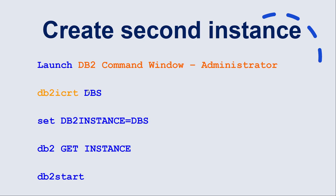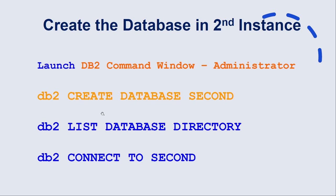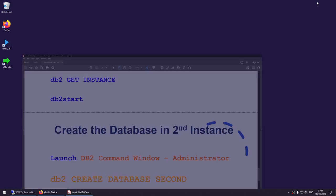Run db2icrt dbs — 'dbs' becomes the name of your second instance. To switch to it, set the DB2INSTANCE environment variable: SET DB2INSTANCE=dbs. Verify with db2 GET INSTANCE, start it with db2start, then CREATE DATABASE second. Verify it's created and connect to it. That's the overview of everything we are going to cover in this tutorial.